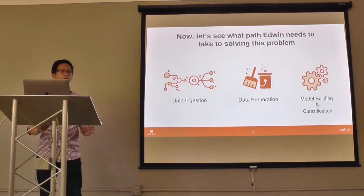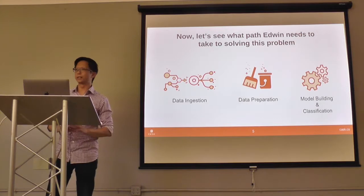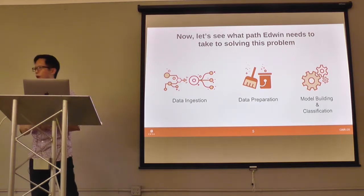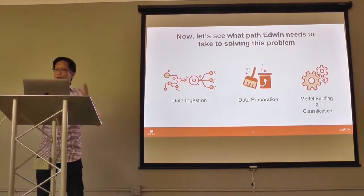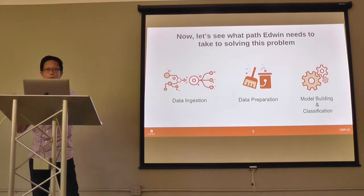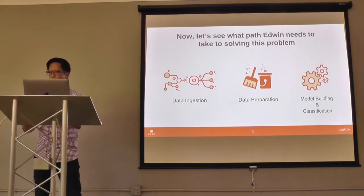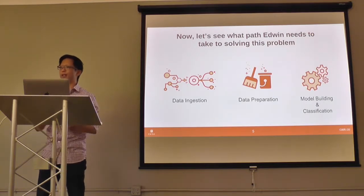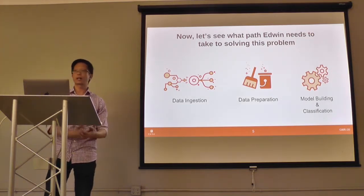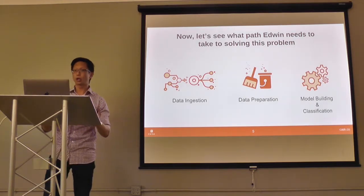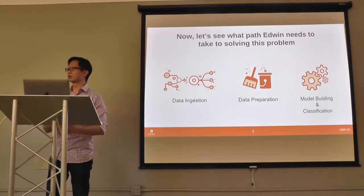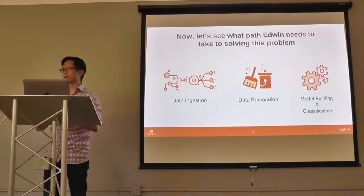What does Edwin need to do to solve this customer happiness problem? First, Edwin needs to ingest the data from the data support portal. Then, after ingestion, he needs to prepare the data and format it properly so analysis can be done on it. Finally, he needs to build a machine learning model to predict and classify whether a certain customer is actually happy or not. Let's talk about some of the pain points that data scientists usually face when they go through these three steps.